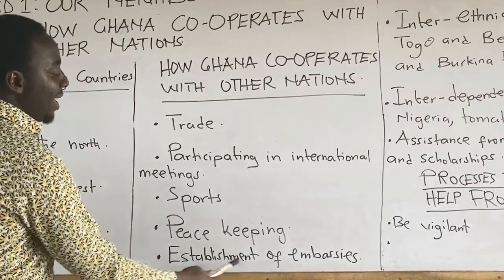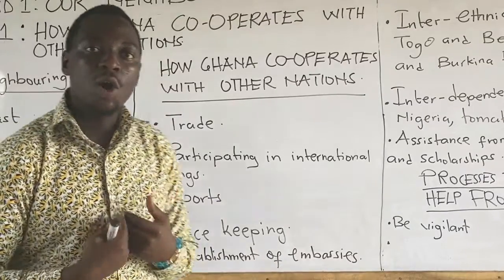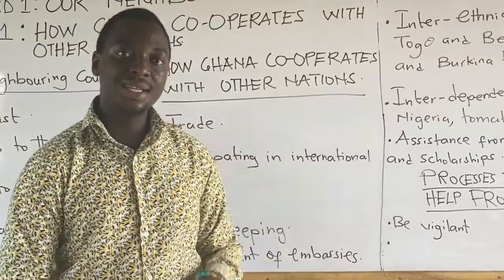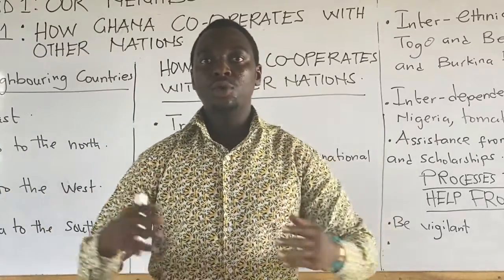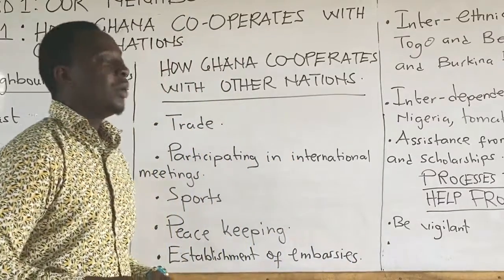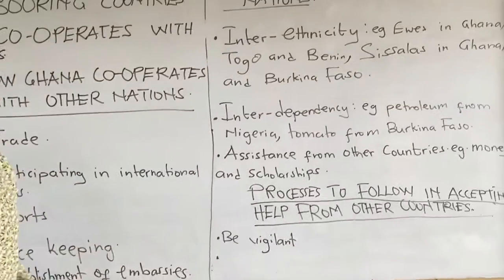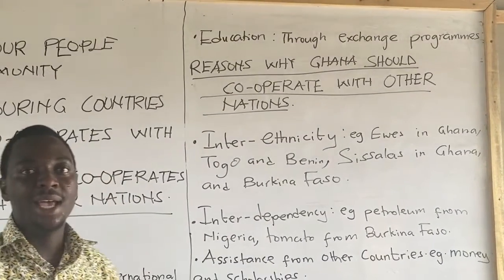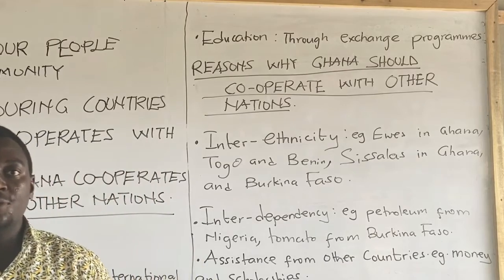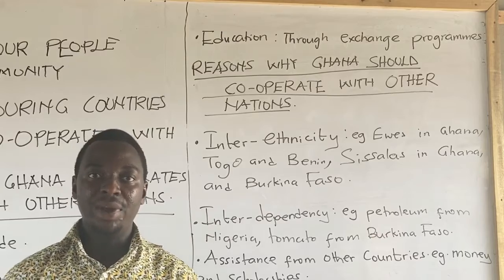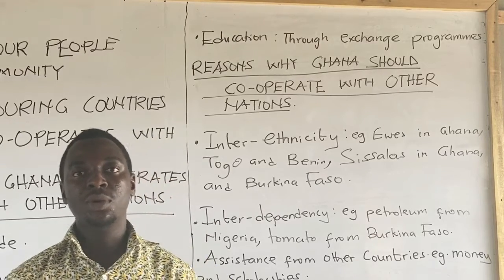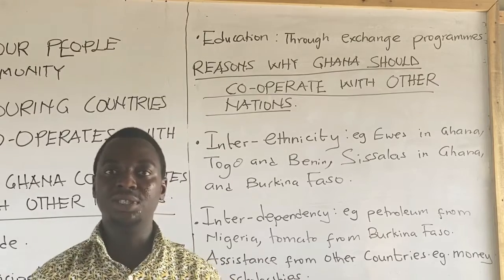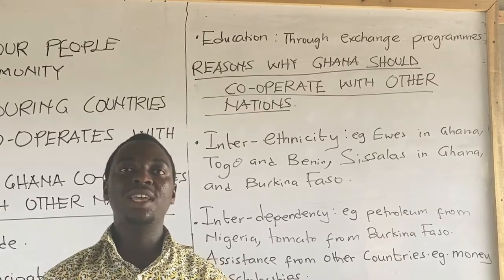The next point is the establishment of embassies. Ghana establishes her own embassies in other countries to represent Ghana over there, and other countries also establish their embassies in Ghana. Through this, we cooperate with those nations. Ghana also cooperates through education — through exchange programs and scholarships. Students from Ghana travel to various countries to learn, and students from other countries travel to Ghana to learn through our tourist sites and educational aspects. We also give scholarships and receive scholarships in return.